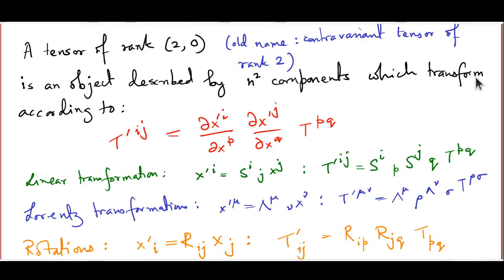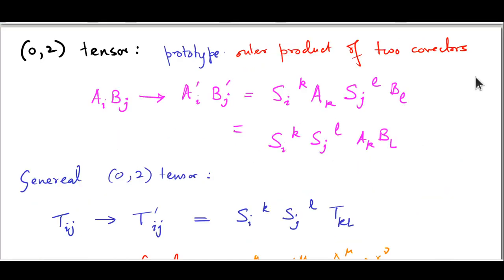For a linear coordinate transformation, ∂x'^i/∂x^p is simply S^i_p, so t'^ij = S^i_p S^j_q t^pq. For Lorentz transformations where x'^μ = Λ^μ_ν x^ν, this becomes t'^μν = Λ^μ_ρ Λ^ν_σ t^ρσ. For rotations where x'^i = R_ij x^j, noting that there are no upstairs or downstairs distinctions under orthogonal transformations, t'_ij = R_ip R_jq t_pq. There is no concept of contravariant versus covariant tensors when dealing with rotations — there is only one kind of tensor for every rank.